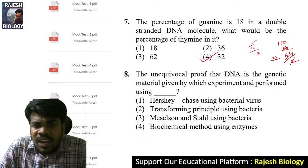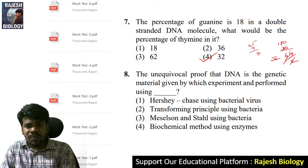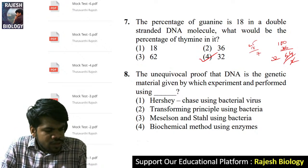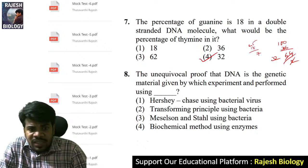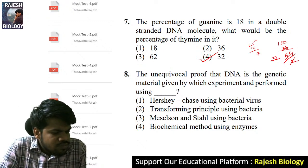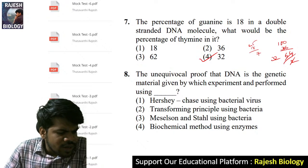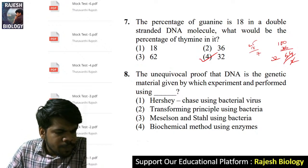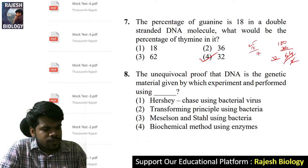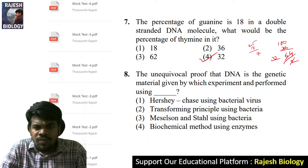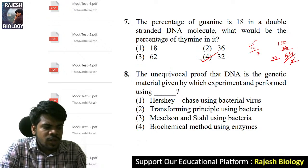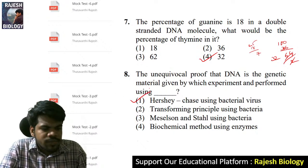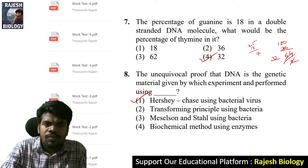The eighth question: unequal proof that DNA is the genetic material was given by which experiment? The right answer is Hershey-Chase experiment using bacterial virus. Chandrika answered Meselson-Stahl using bacteria — that is wrong. Jnaneshwari said transforming principle using bacteria — also wrong. The correct answer is Hershey-Chase, option one.